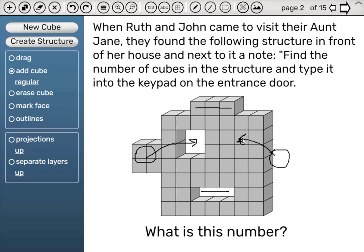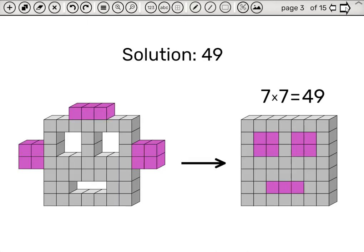So we get a box of 1, 2, 3, 4, 5, 6, 7 by 1, 2, 3, 4, 5, 6, 7, so 7 times 7 is 49. For your convenience, we have the solution on the next page. The cubes we moved around are painted purple, and here we can see their new placement and the calculation.